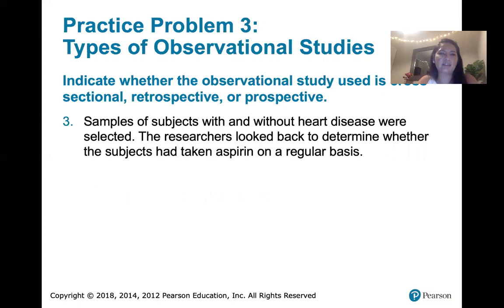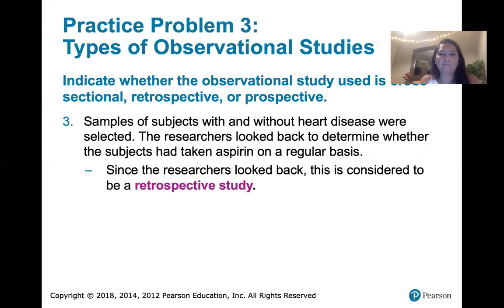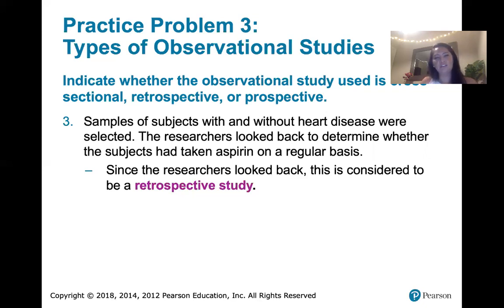In the last example, samples of subjects with and without heart disease were selected, and then researchers looked back to determine whether the subjects had taken aspirin on a regular basis. Since the researchers are looking back, that would be retrospective. The problem is a little contrived — I'm not sure how researchers would look back unless they had records or interviewed subjects, which might feel more cross-sectional. But since we're looking back at the past, it's retrospective.